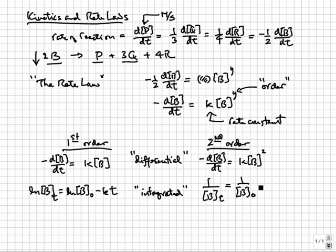For second order reactions, 1 over B at time t equals 1 over B at time 0 plus kt.